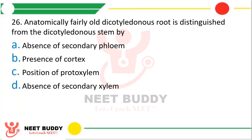Question 26: An anatomically fairly old dicotyledonous root is distinguished from a dicotyledonous stem by: absence of secondary phloem, presence of cortex, position of protoxylem, or absence of secondary xylem. The correct answer is option C, position of protoxylem.